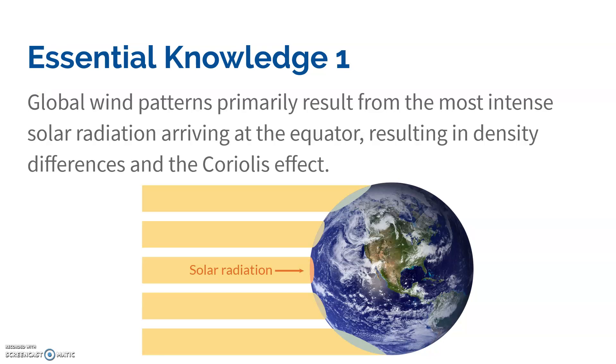The big thing that starts it all is the difference in solar radiation. The most intense radiation is felt at the equator, whereas the least intense radiation is felt at the poles. And that has to do with the curvature of the Earth.